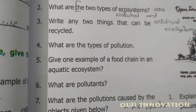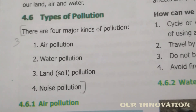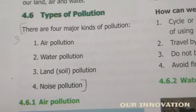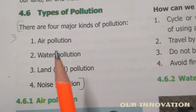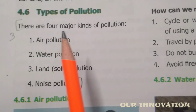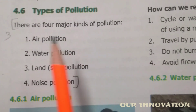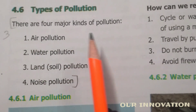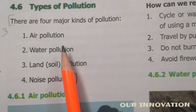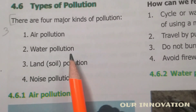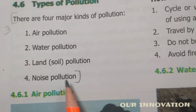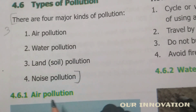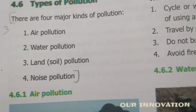What are the types of pollution? From page number 60, under the heading 'Types of Pollution,' the four major kinds are air pollution, water pollution, land pollution, and noise pollution.